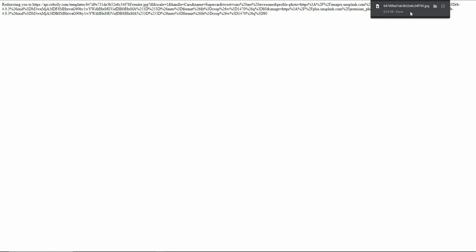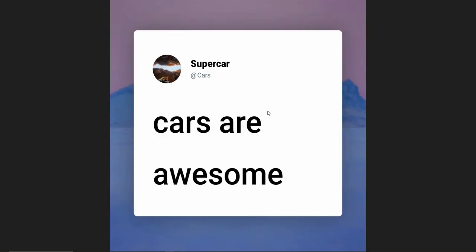After pasting, click on the render link and one image will be downloaded. Let's open it — the template-based image has been created perfectly. The name 'Supercar', the handle 'cars', the profile image, the tweet 'Cars are awesome', and the background image are all exactly as specified.